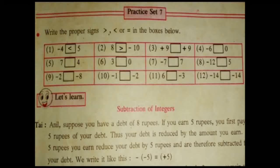Next: plus 9 and plus 9. Both numbers are equal, so you have to put the equal to sign — plus 9 is equal to plus 9. Next: minus 6 and 0. Correct answer is smaller, because 0 is always greater than all the negative numbers. Next: 7 and 4 — 7 is greater than 4. Next: 3 and 0 — 3 is greater than 0, because positive numbers are greater than 0.